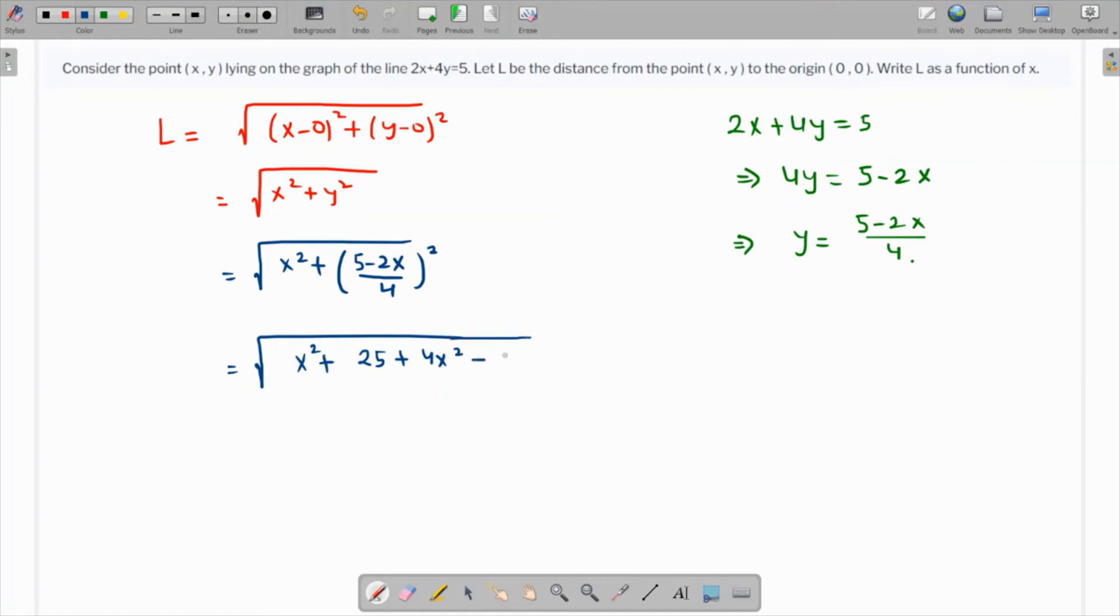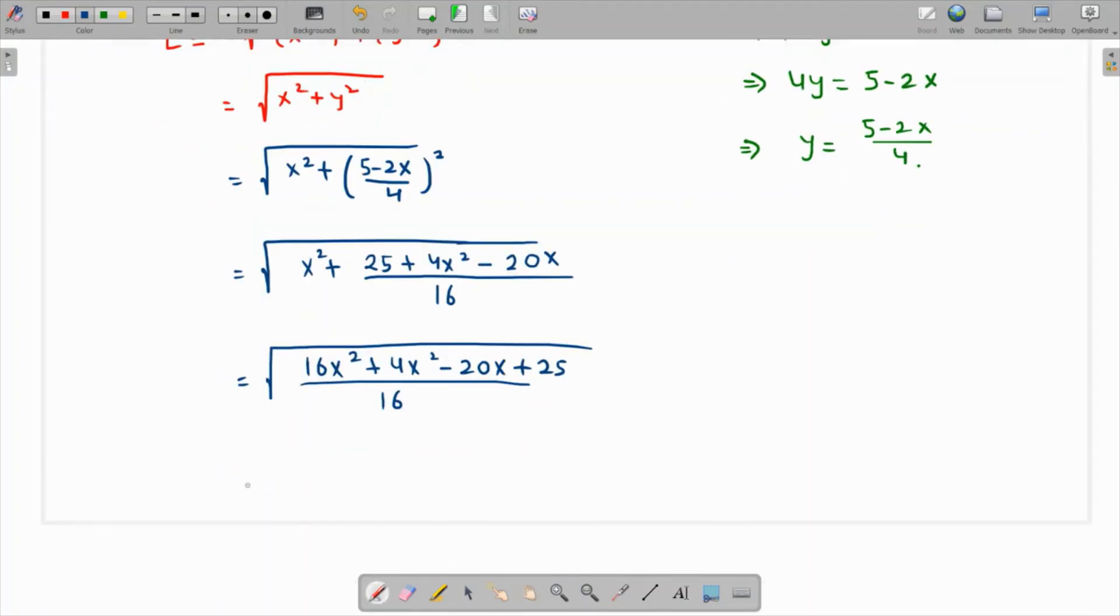If we take a common denominator as 16, that's (16x² + 4x² - 20x + 25)/16. Since 16 + 4 is 20, we get (20x² - 20x + 25)/16.